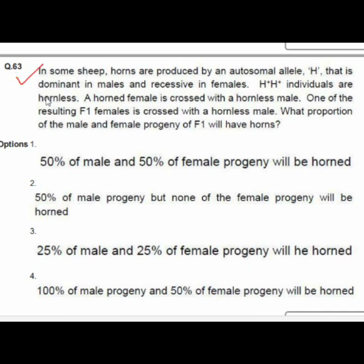Question 63: In some sheep, horns are produced by an autosomal allele H that is dominant in males and recessive in females; H+H+ individuals are hornless. A horned female crossed with a hornless male; a resulting F1 female crossed with a hornless male. Option 2 is correct: 50% of male progeny but none of the female progeny will be horned.